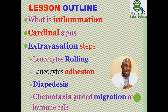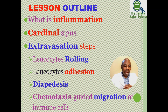In this lesson we're going to cover: first, the definition of what inflammation is; then the cardinal signs of inflammation — what most people know about. We will then discuss a very important aspect of inflammation, which is extravasation steps — how leukocytes roll inside the blood vessels, how they adhere to cell adhesion molecules, then chemotaxis-guided migration of immune cells and leukocytes out of the blood vessels to go to the inflamed tissue.